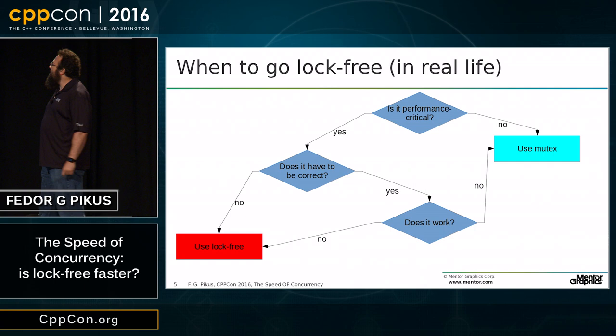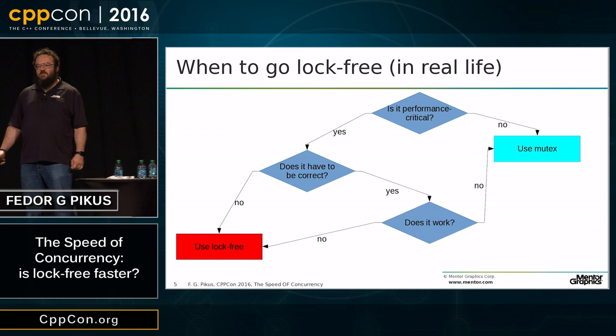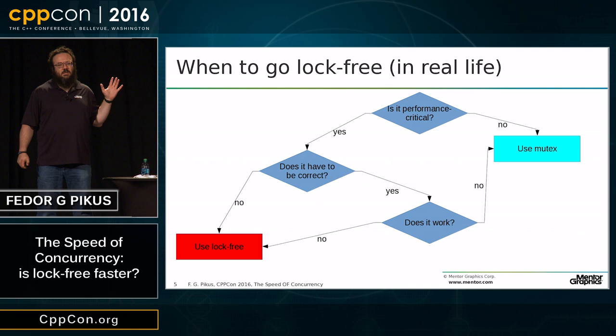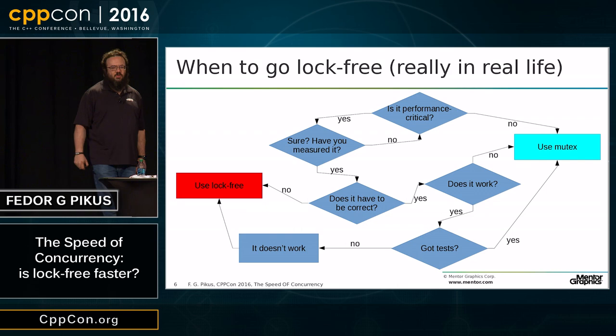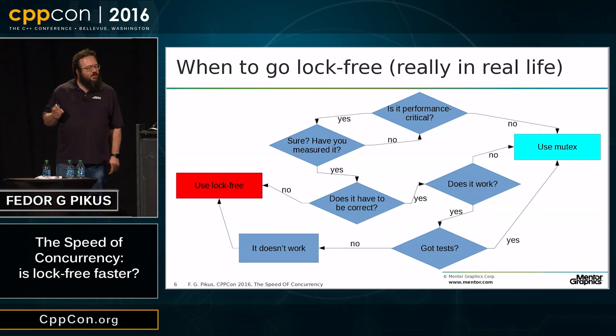Here is your real-life practical decision diagram for going with lock-free programming. Do you want a faster program? Yes — you try to make it lock-free. It doesn't work, so you slap a couple of locks around it, and then it works. This actually makes some optimistic assumptions about software engineering process: one, that you actually profiled before you decided it's performance critical, and two, that you actually tested to know that it's correct.